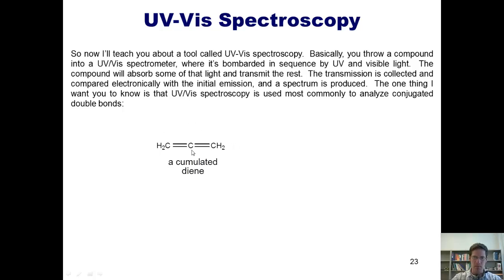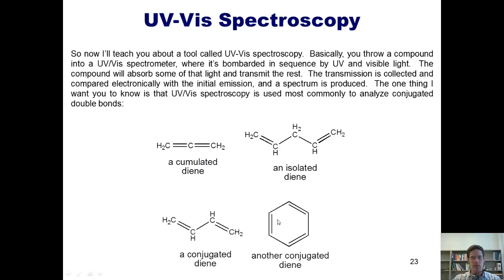This type of compound is called an isolated diene, where both double bonds are at least one carbon away from each other, or maybe more. And these types of compounds are called conjugated dienes, where every other bond is a double bond, double, single, double. Benzene is also a conjugated diene.